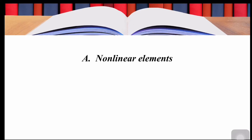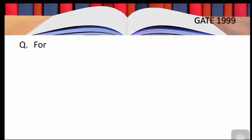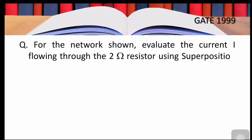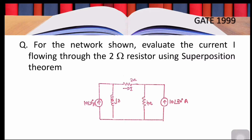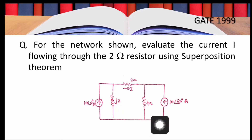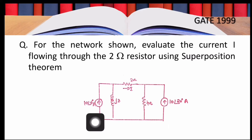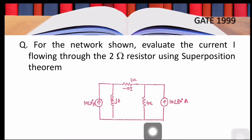Moving on to the next question from GATE 1999: evaluate the current i flowing through the 2-ohm resistor using superposition theorem. The network has two resistors — one 2-ohm and one 4-ohm — one inductor, and two independent current sources: 10∠20° and 10∠0°. The interesting fact is that the network is given in the frequency domain, which means our analysis should be done in the frequency domain.